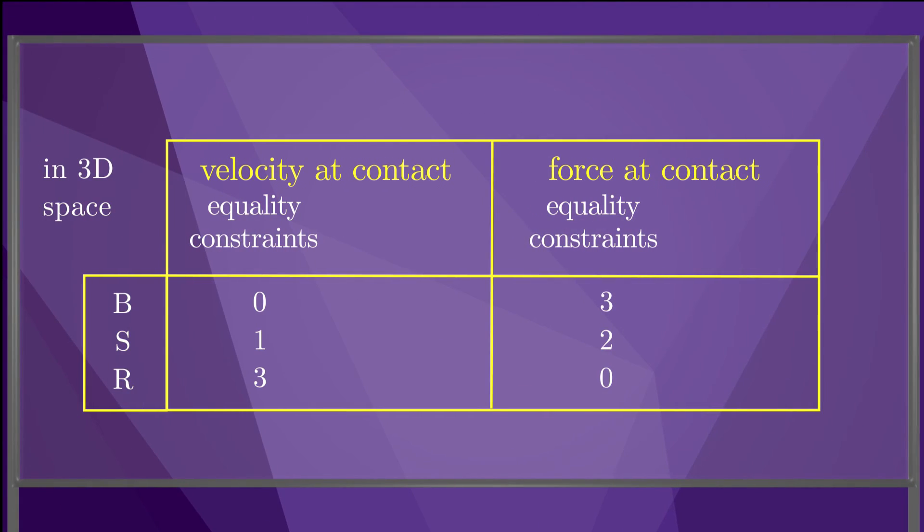If the contacts are in three-dimensional space instead of a plane, each contact label provides three total constraints when we solve for the velocities and forces, and the full table looks like this.